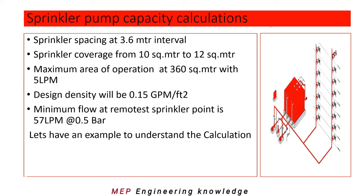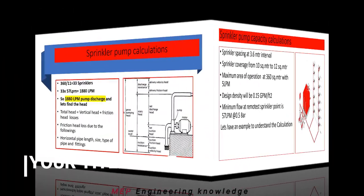As seen in previous videos, sprinkler spacing is maintained at 3.6 meter intervals with sprinkler coverage from 10 to 12 square meters. So the maximum area of operation is 360 square meters at 5 liters per minute. Design density will always be 0.15 GPM per square feet. The minimum flow at the remote test sprinkler point is 57 LPM at 0.5 bar.